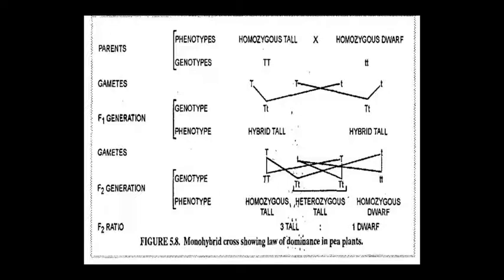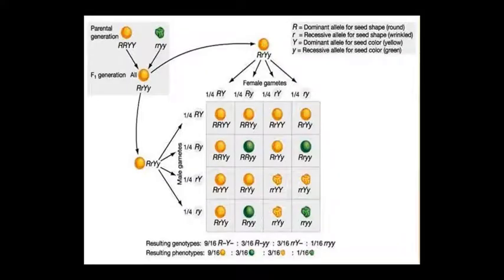A monohybrid cross involves crossing for only one character at a time. A dihybrid cross involves studying two characters simultaneously — for example, height and flower color. When two characters are taken and crossing is performed, it is called a dihybrid cross.